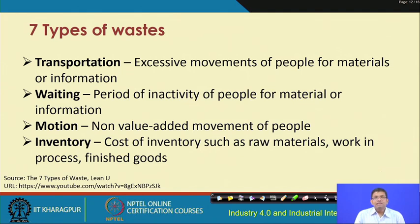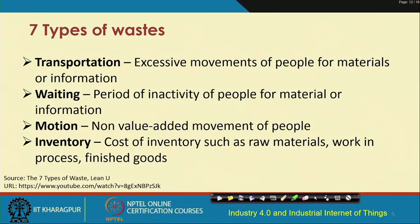There are different types of waste that must be minimized in lean. The first is transportation waste, which refers to excessive movement of people, materials, or information beyond what is required. The second is waiting waste, which refers to periods of inactivity where people wait for material or information to arrive — everything should be available right then and there, and this waiting must be minimized.